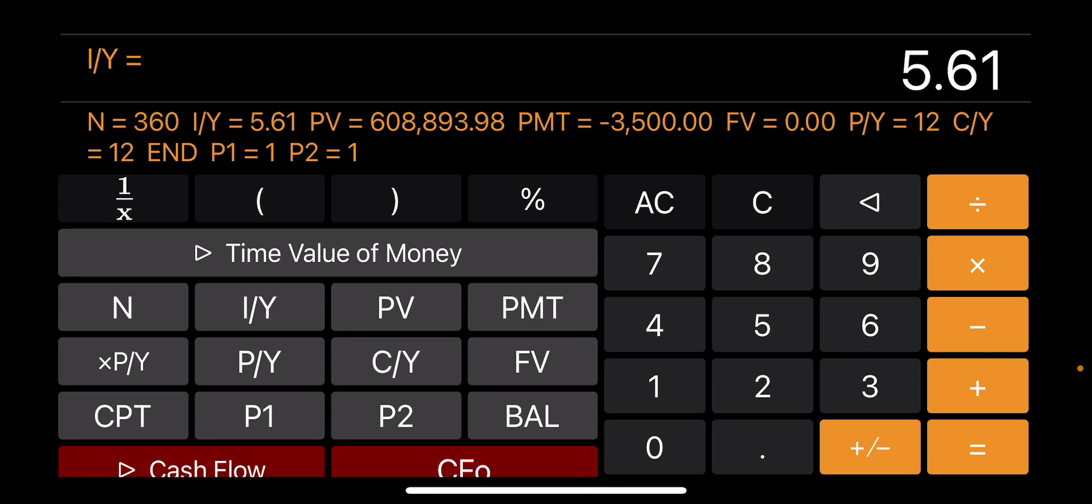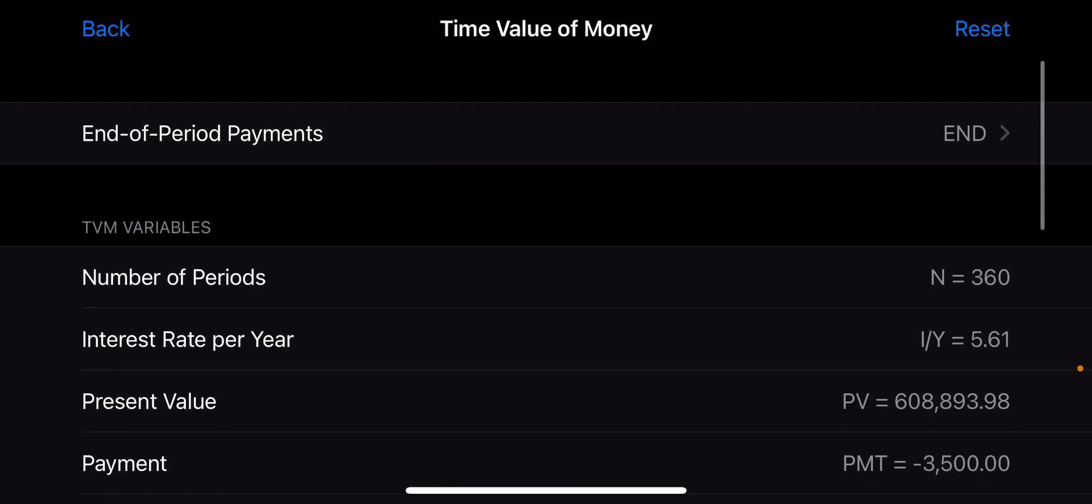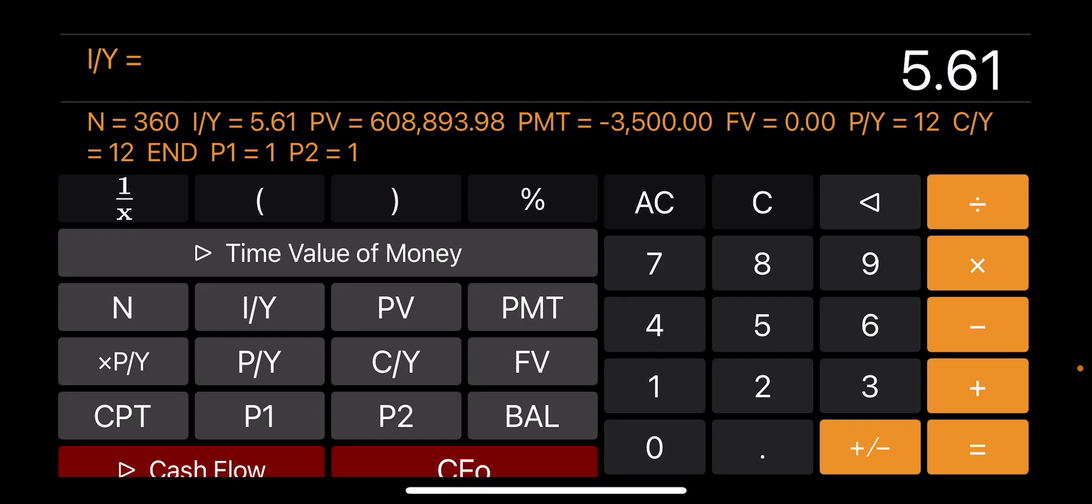...for a house that is $608,893.98—not for the house, actually really the amount of mortgage that I'm getting from the bank, because there may be some down payments that you may need to put. So in this case, we calculated that the interest rate needs to be 5.61. So I can also press that Time Value of Money button to see these values in a table format. I will create other videos for some other related things related to mortgage, for example amortization.